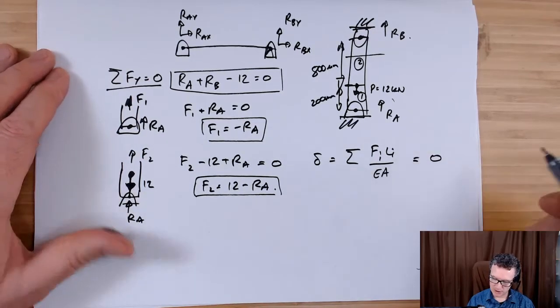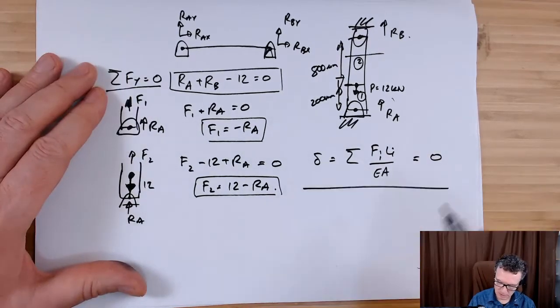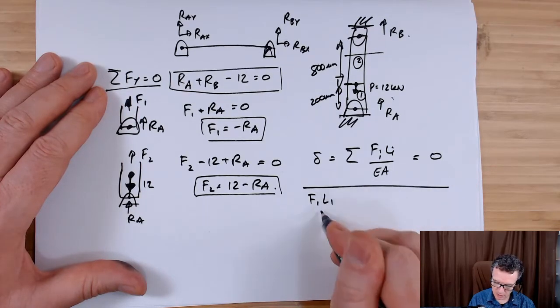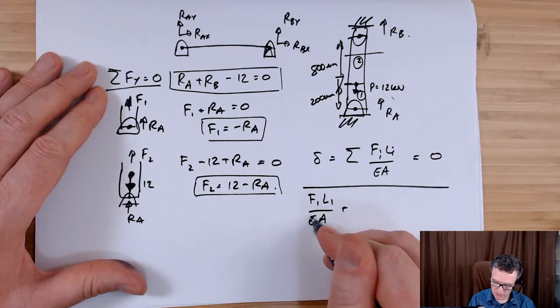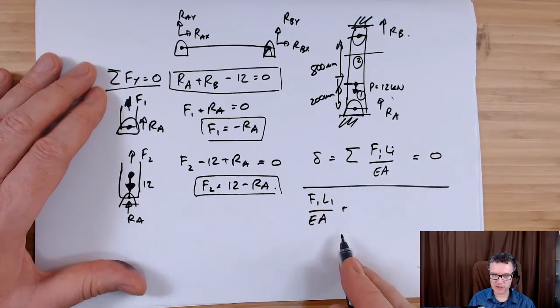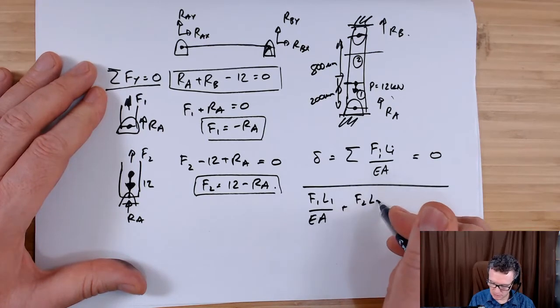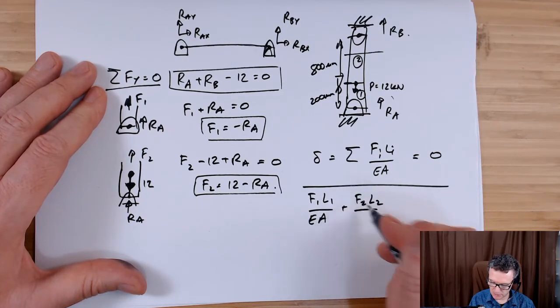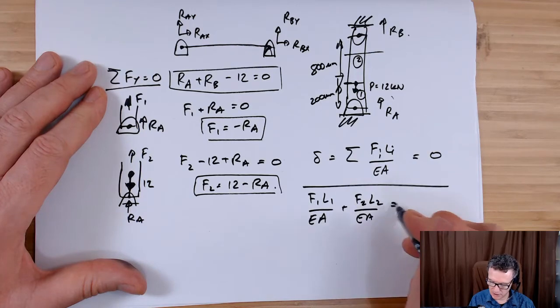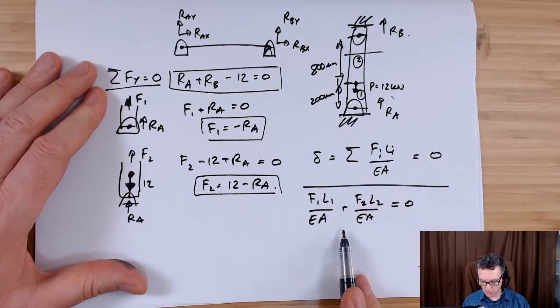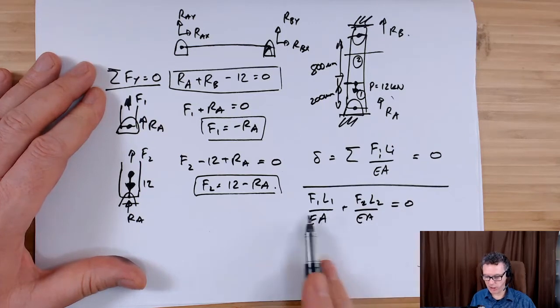So we've got F1 times L1 over EA at the bottom. You can see that we don't actually need this in our calculation, the EA. F2 times L2 over EA equals zero. I'm not making any assumption about what's being squashed, what's being pulled here, so I'm just leaving my forces and I'm going to let the definition of whether it's tension being positive or compression be negative take care of that.